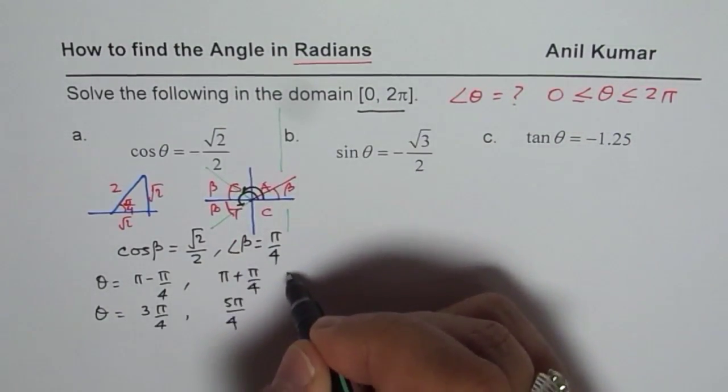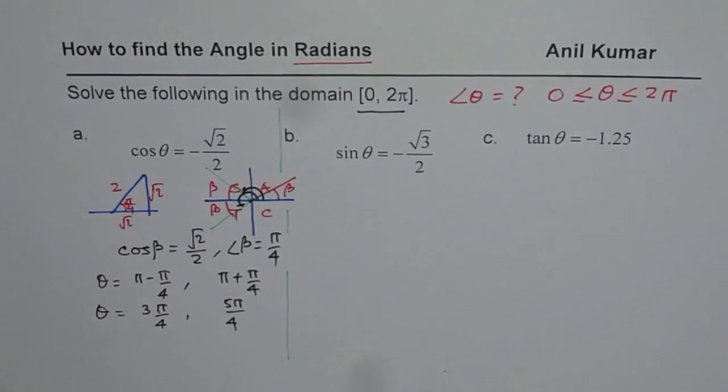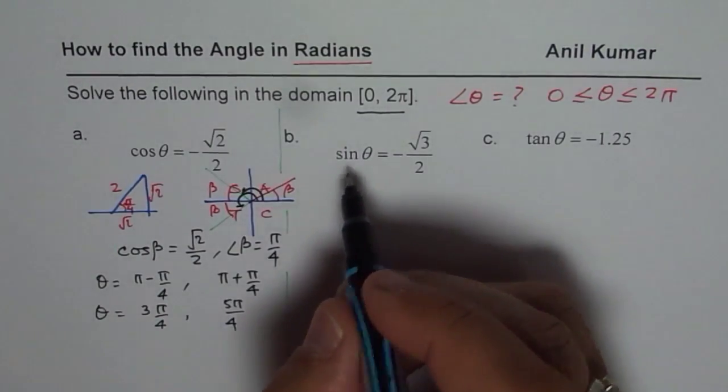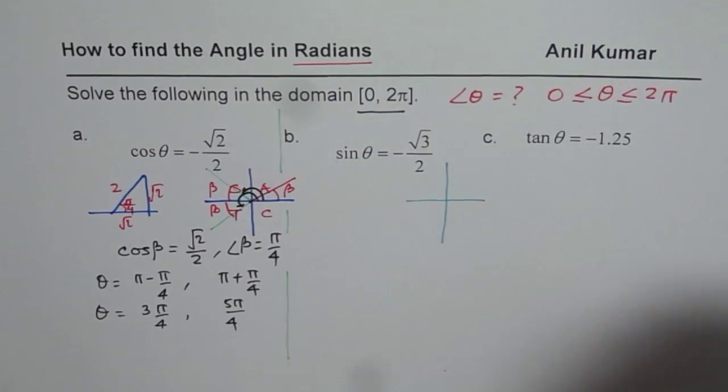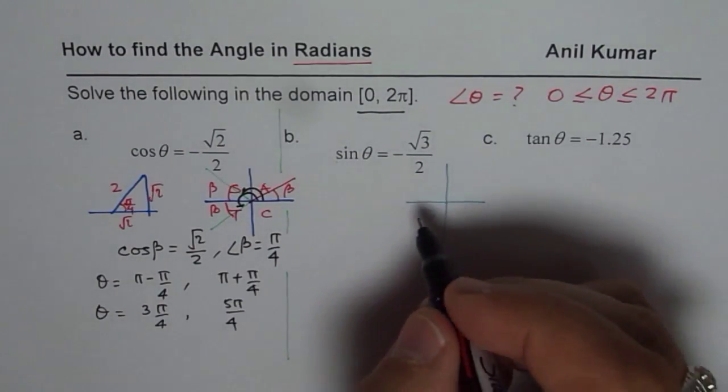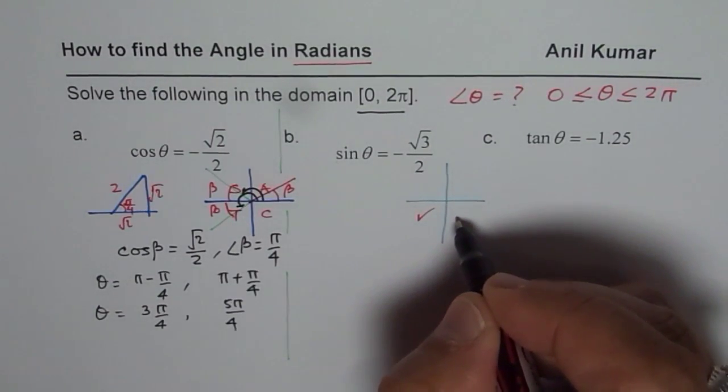You can pause the video and solve the other two. Let's go through these steps once again. Sine negative, so we are looking for sine negative. That means as per our rule, we should be in quadrant 3 and 4.